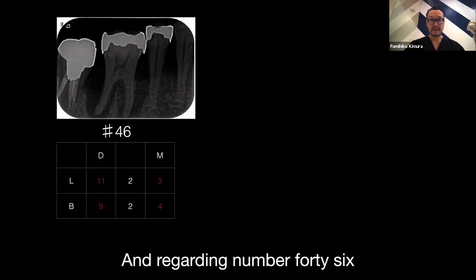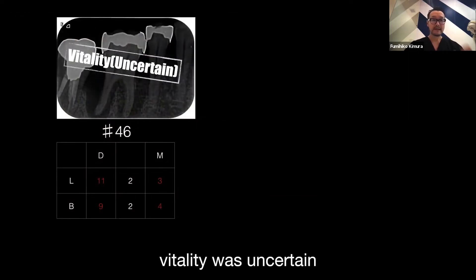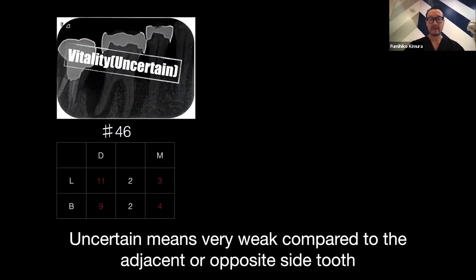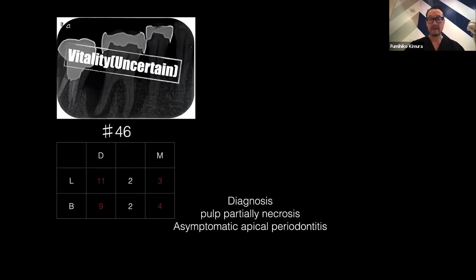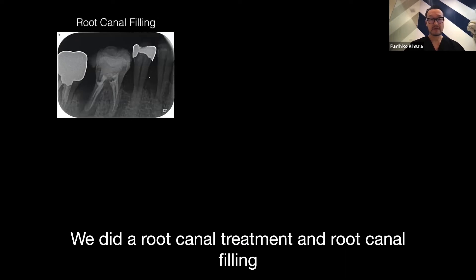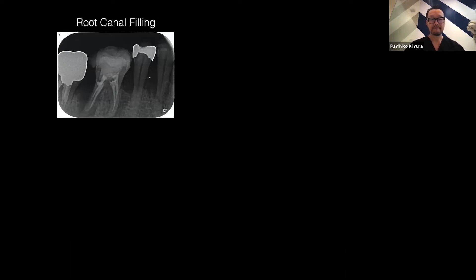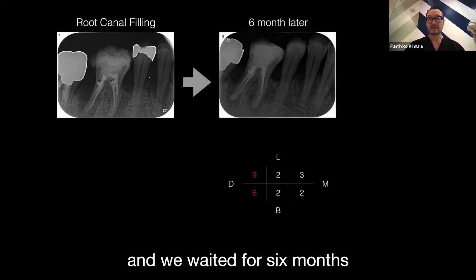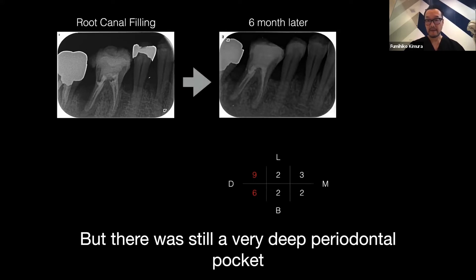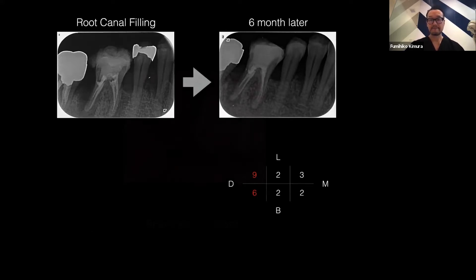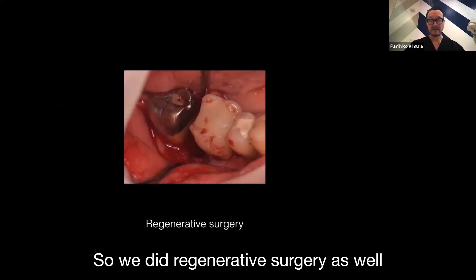Regarding number 46, vitality was uncertain. Uncertain means very weak compared with the adjacent or opposite side tooth. So we diagnosed partial necrosis and symptomatic apical periodontitis. Because this is a multi-rooted tooth, we did root canal treatment and root canal filling. We waited for six months, but there was a very deep periodontal pocket still remaining. So we did periodontal regenerative surgery as well.